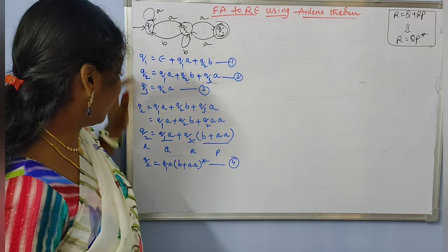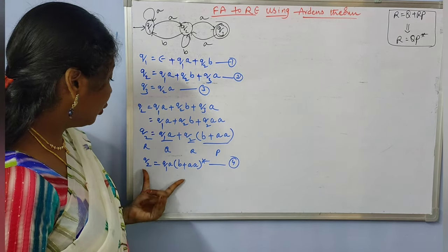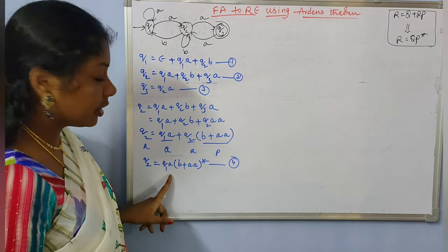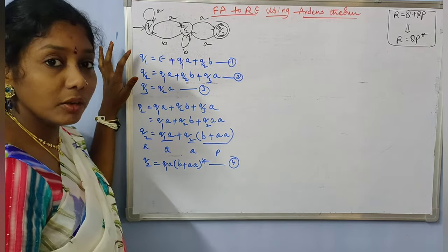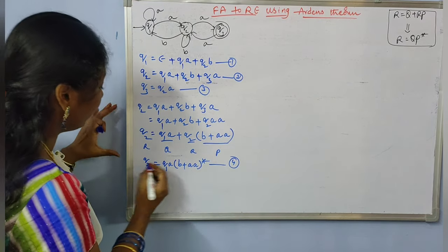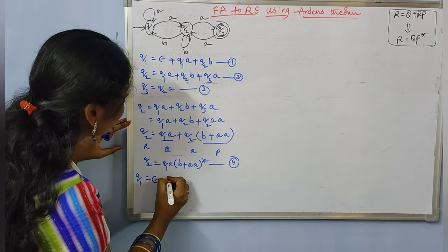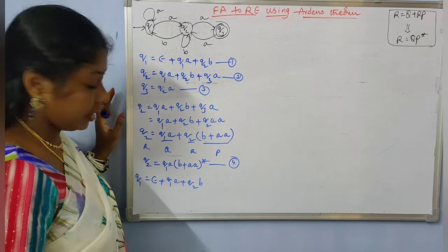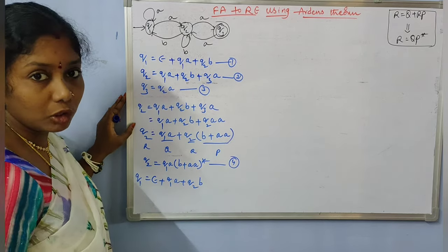Next, let us consider Q1. Consider equation 1: Q1 = epsilon + Q1·A + Q2·B. Now we will substitute the value of Q2 from equation 4. Q2 = Q1·A·(B + AA)*. So substituting Q2 in equation 1, we get Q1 = epsilon + Q1·A + Q1·A·(B + AA)*·B.